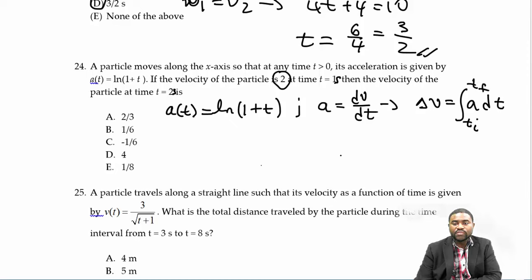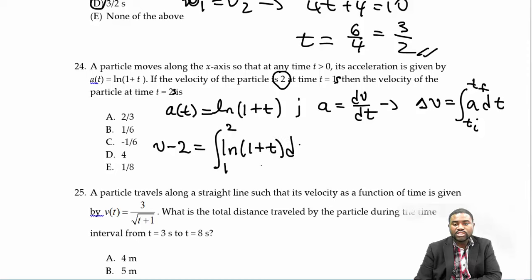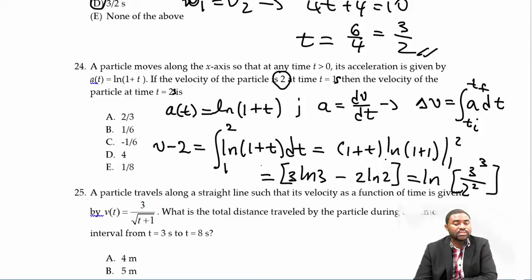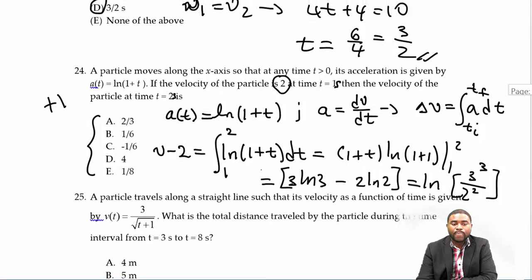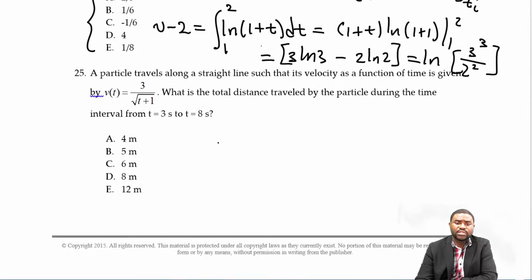So v minus 2 is the integral from t = 1 to t = 2 of ln(1 + t) dt. I'll give you a formula sheet so you should be able to integrate functions like this using integration by parts, but the answer is not among the choices here, so we move on.